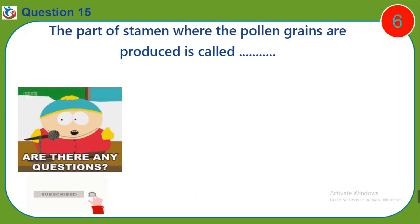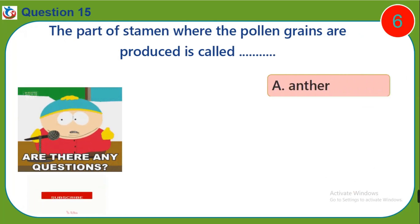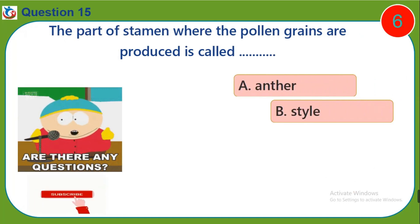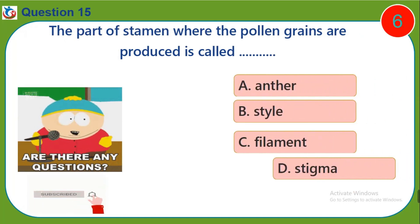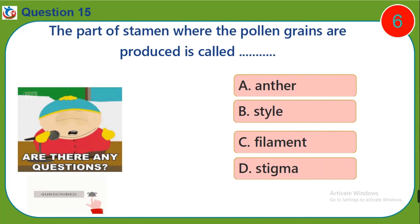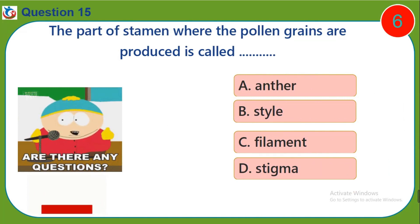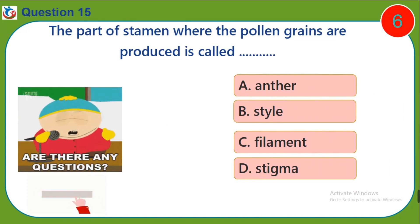Question fifteen: The part of the stamen where the pollen grains are produced is called — a) anther, b) style, c) filament, d) stigma.